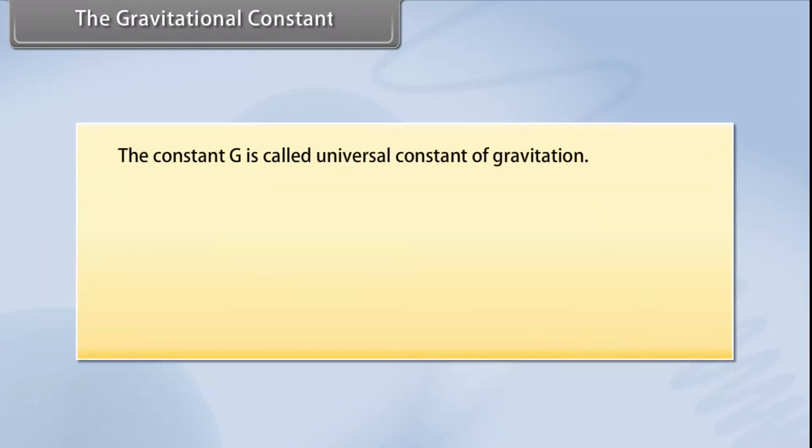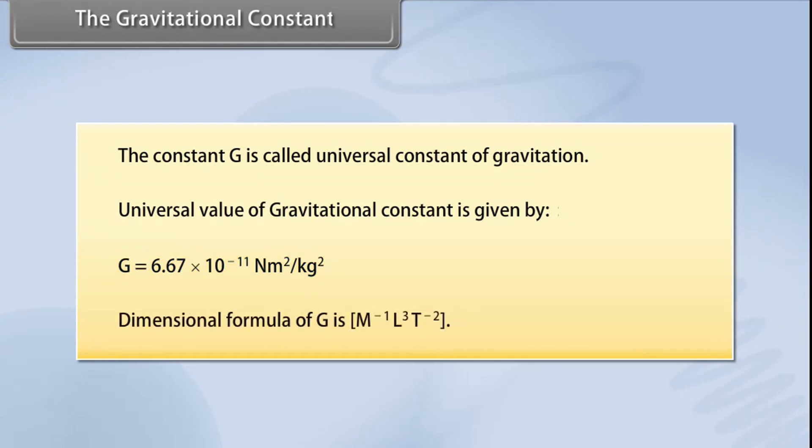The Gravitational Constant: The constant G is called Universal Constant of Gravitation. The universal value of gravitational constant is given by G is equal to 6.67 into 10 to the power minus 11 Newton meter square by kilogram square. Dimensional formula of G is M to the power minus 1 L cube T to the power minus 2.